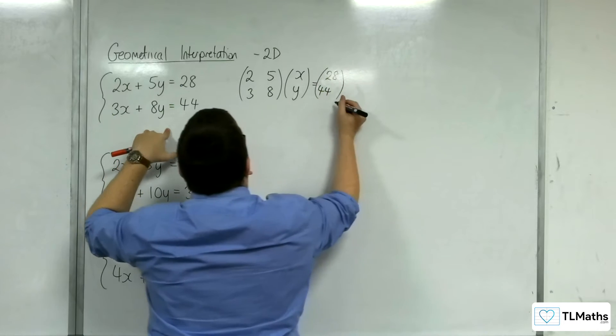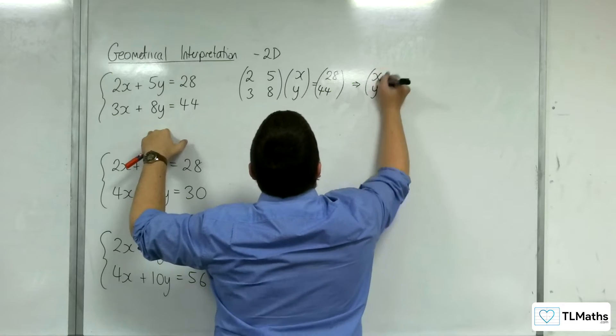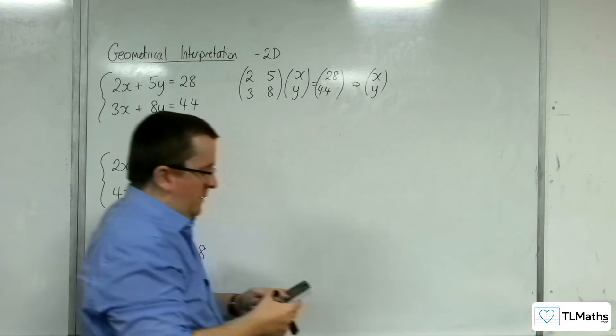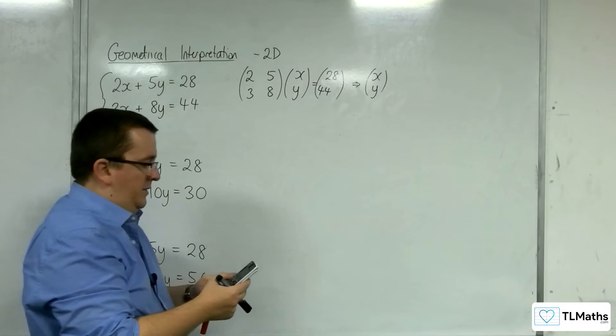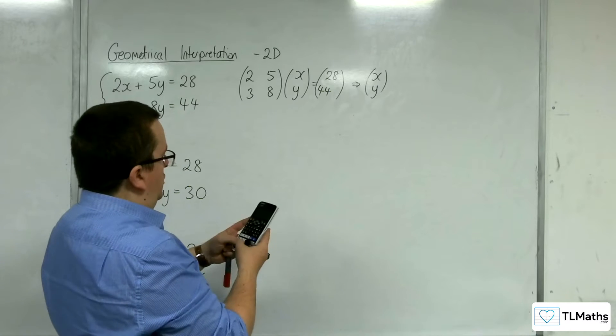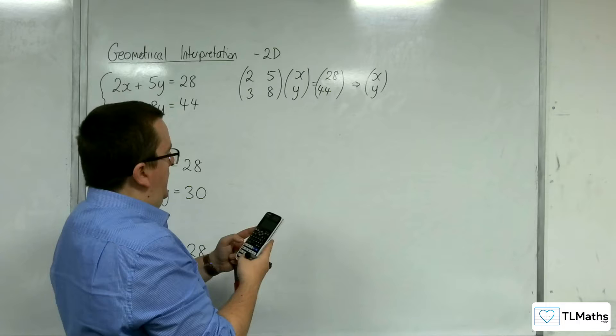Okay. Now if we were to go about solving this, so multiplying this by its inverse matrix. Then if we were to do that, so going into the matrix solver, matrix A, two rows, two columns, 2, 5, 3, 8.